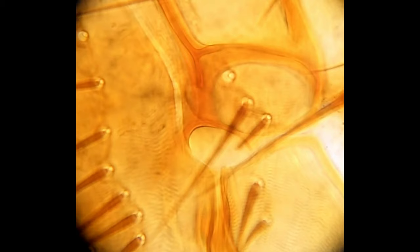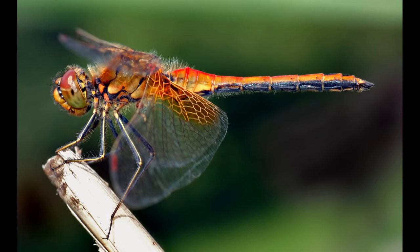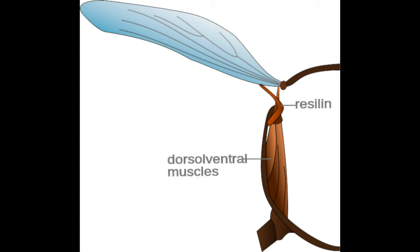Other insects, such as dragonflies and locusts, also have resilin in their pleural arch, but rather than using it for jumping, they use it for flying. In fact, it's likely that the flea's jumping apparatus is derived from the wing system of some previously winged ancestor.